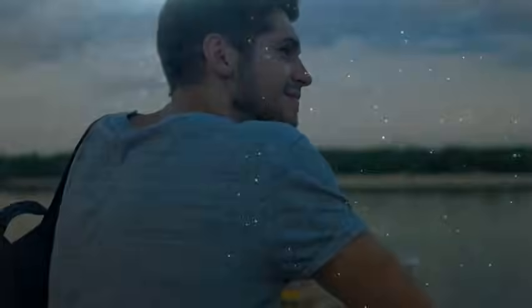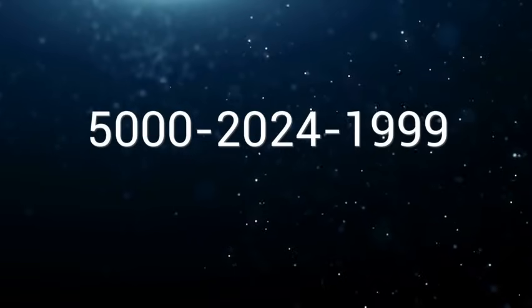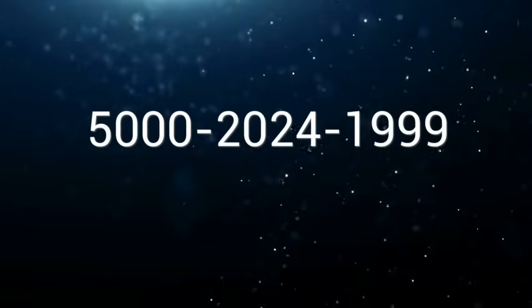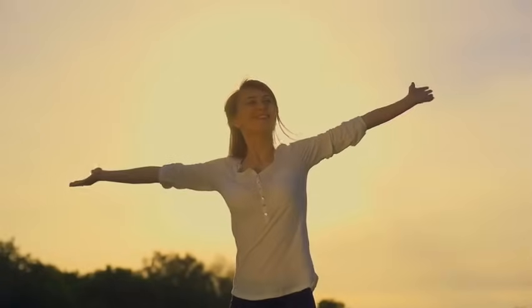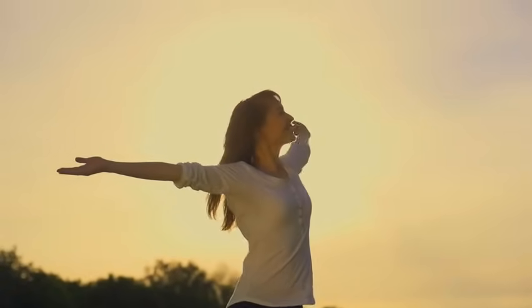We can simplify the process by then instead of saying five zero zero zero two zero two four one nine nine nine and now say 5000 2024 1999. Chunking simplifies complex information making it easier to process.